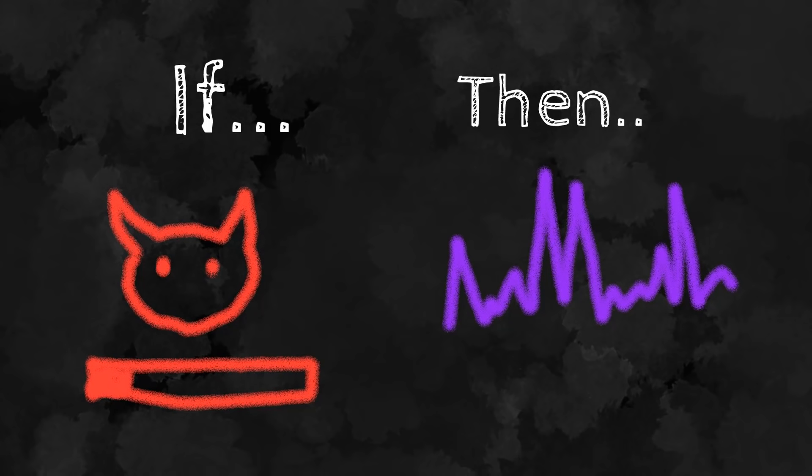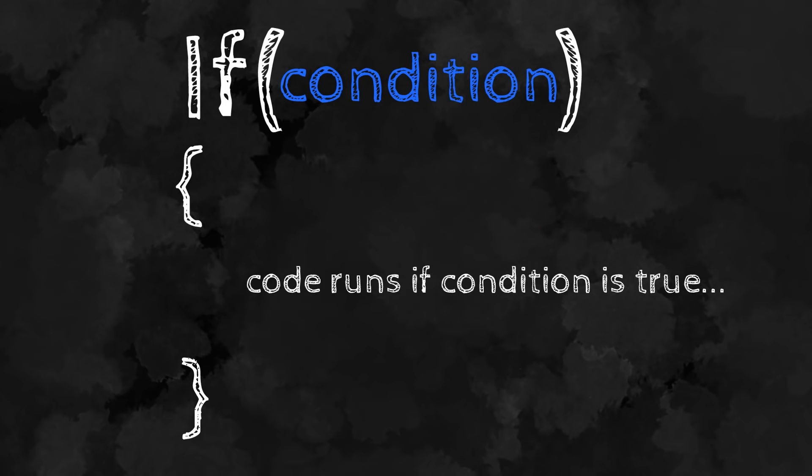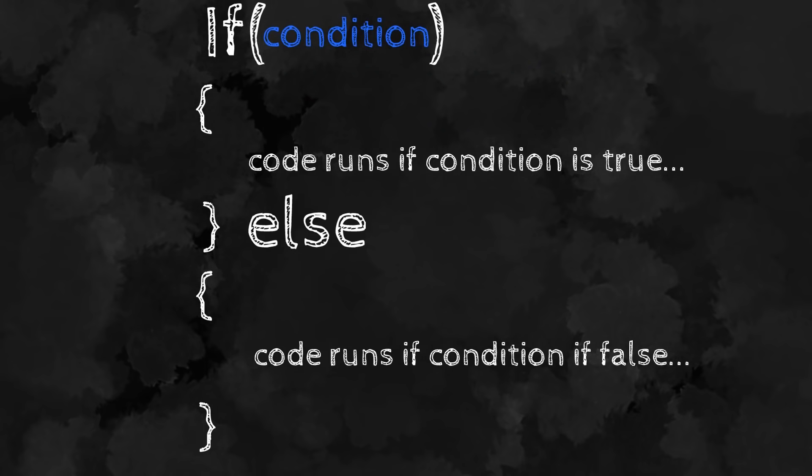The syntax is: type the keyword if, put a condition inside parentheses, and put all the code you want to run if the condition is true inside curly brackets. If the condition isn't true, nothing will happen. Optionally, you can add an else statement right after — all the code in its curly brackets will run if the condition isn't true.